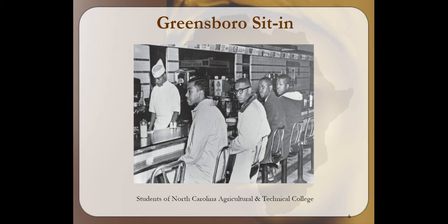Four young men who were students of North Carolina Agricultural and Technical College wanted to join the fight for equality. They planned to sit in. The students entered the store on February 1, 1960 as shoppers, then proceeded to sit at the lunch counter. They were refused service and asked to leave. They sat until the store closed and returned the next day. More students joined them. Angry mobs showed up to harass them. The protests influenced students to take part in sit-ins at other establishments in various cities. The Greensboro sit-in would last until July 25, 1960.